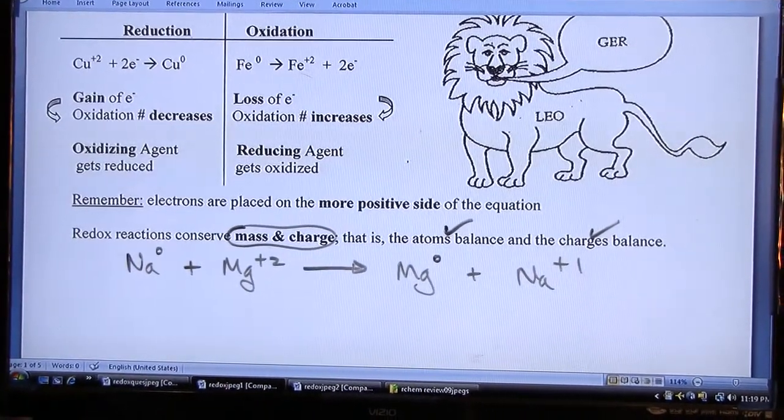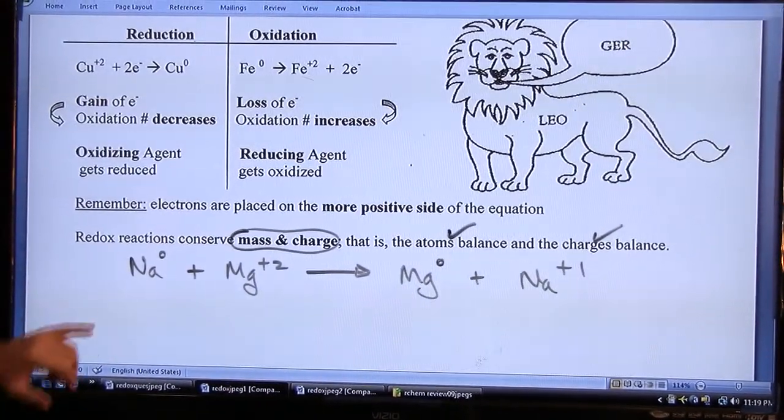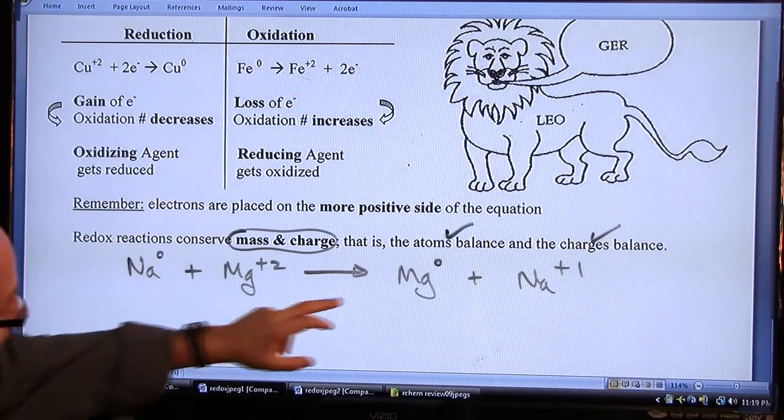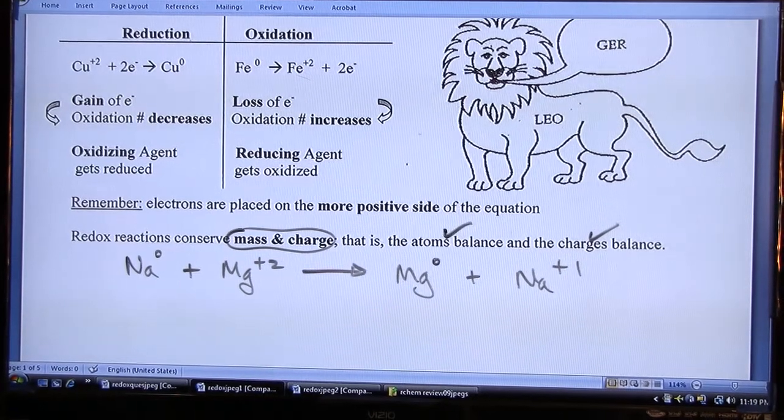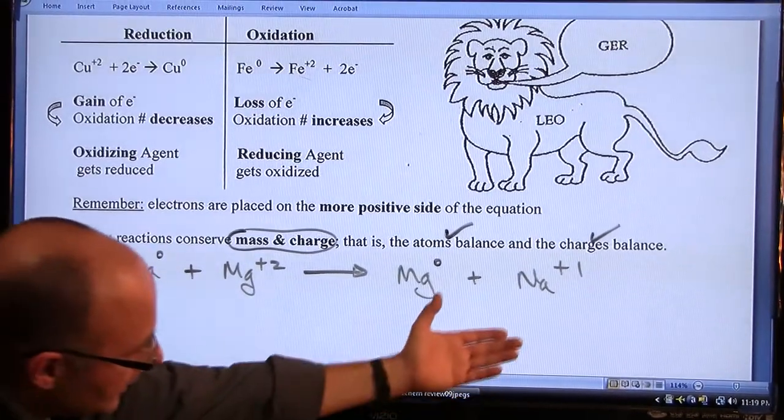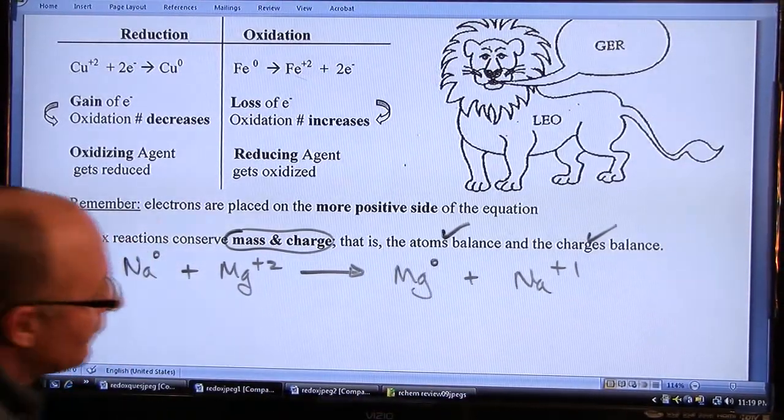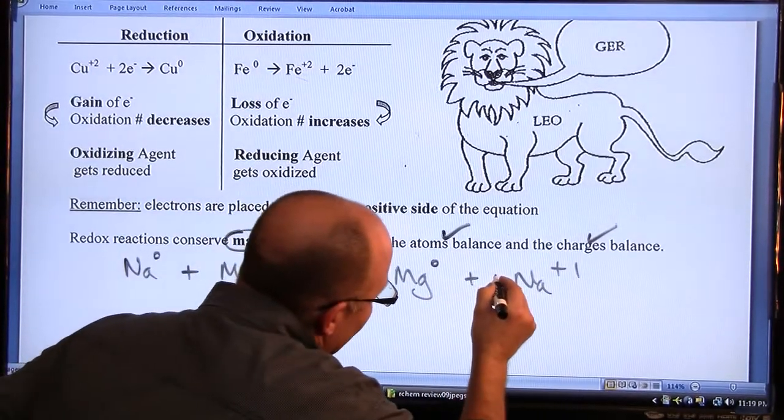And in order to balance this, we have to change the coefficients, which at the moment are 1, 1, 1 and 1. Remember, the coefficient of 1 is always assumed. So to increase the amount of charge on the right side, we'd have to multiply this Na by 2.